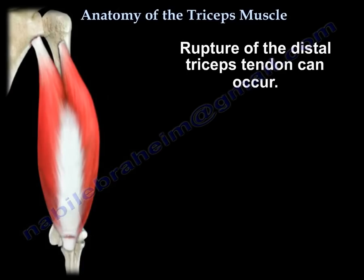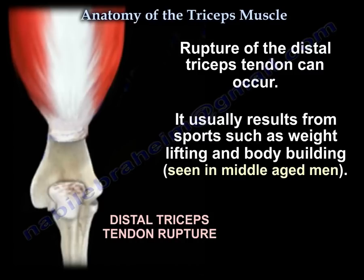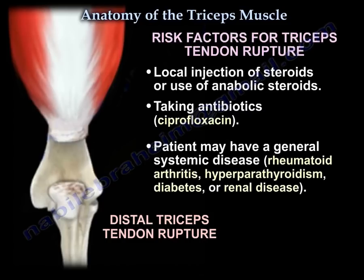Rupture of the distal triceps tendon can occur. It usually results from sports such as weight lifting and bodybuilding, and is seen in middle-aged men. There are some risk factors, such as local injection of steroids, or the use of anabolic steroids, or the patient may have a general systemic disease such as rheumatoid arthritis, hyperparathyroidism, diabetes, or renal disease.